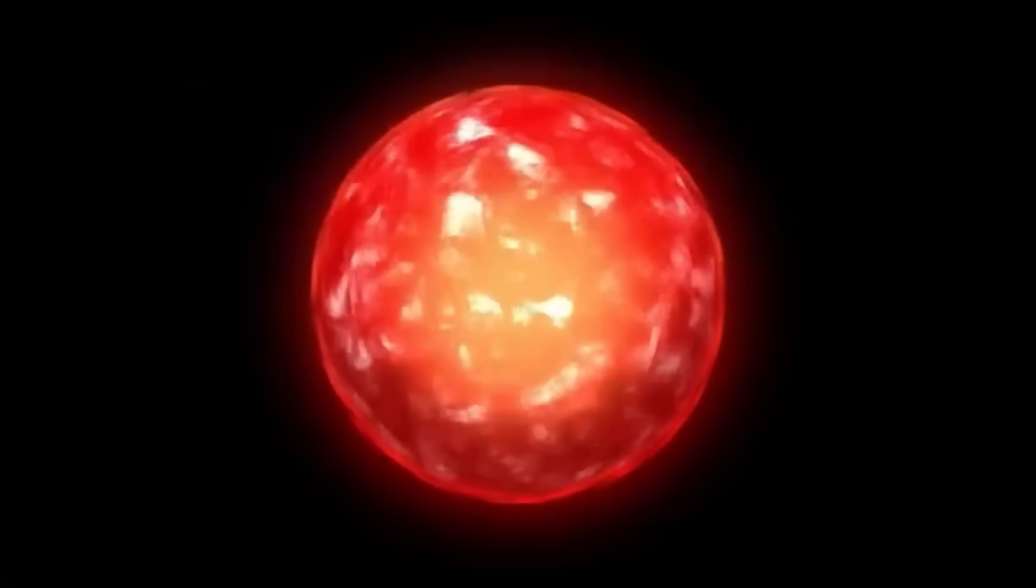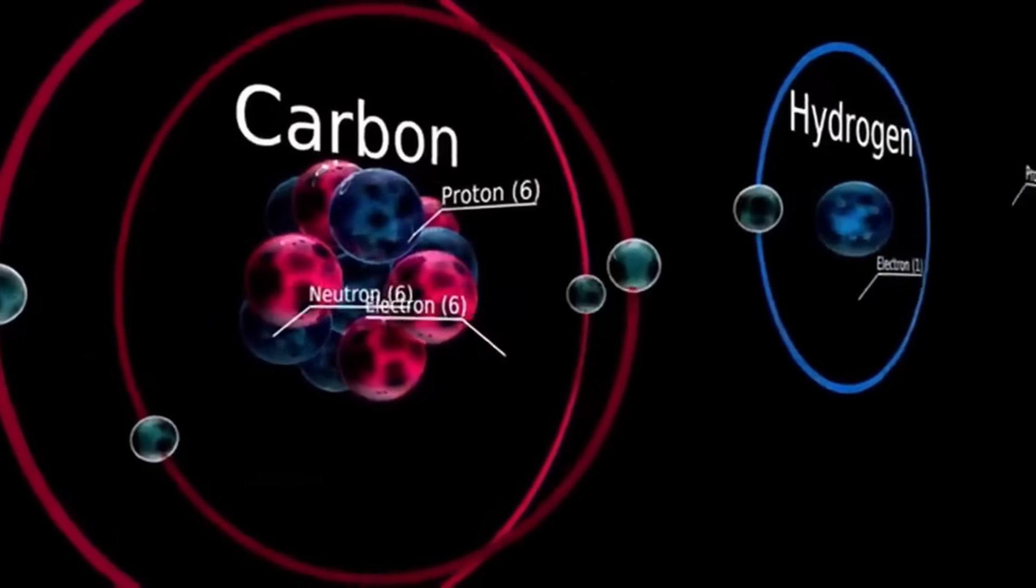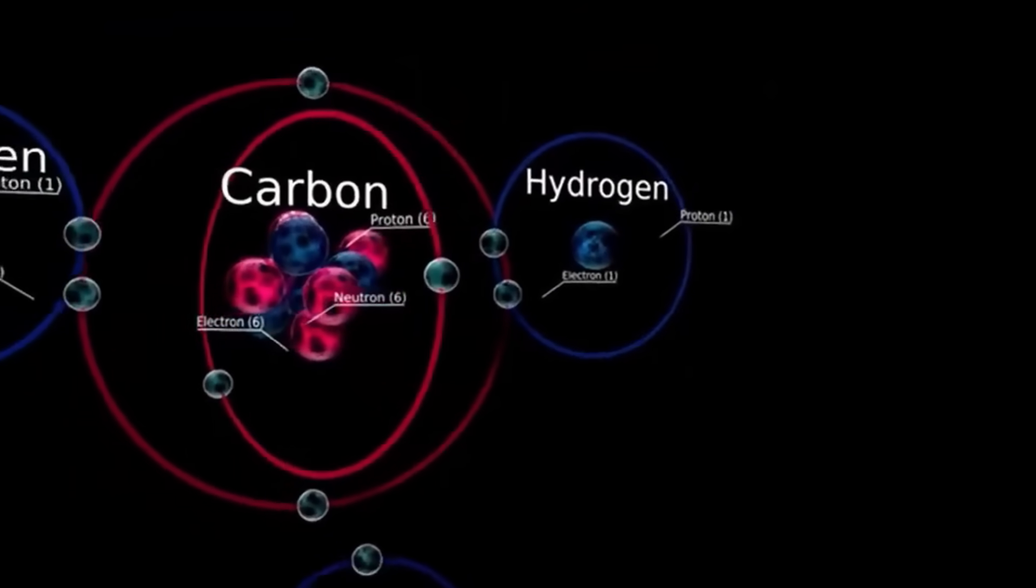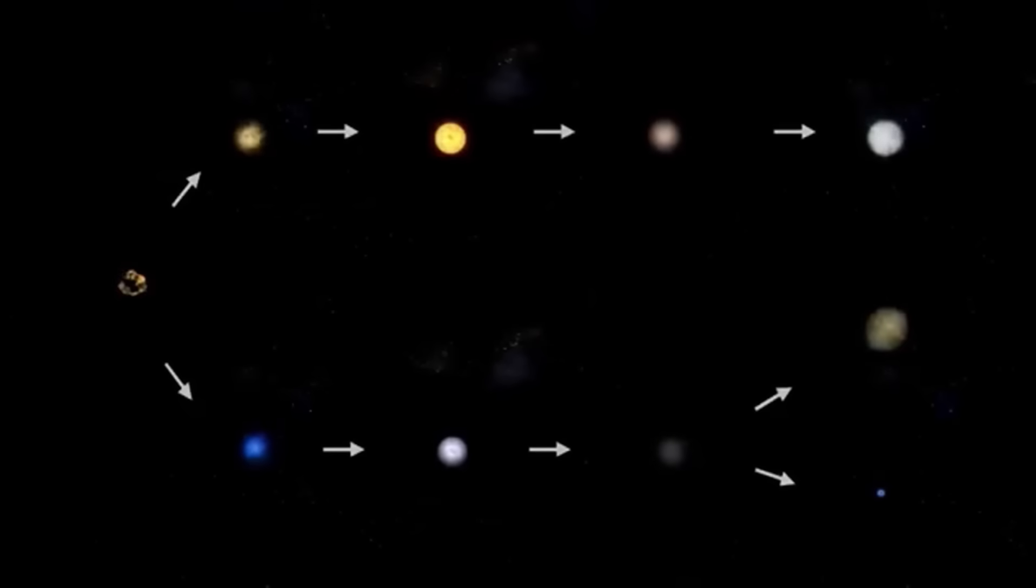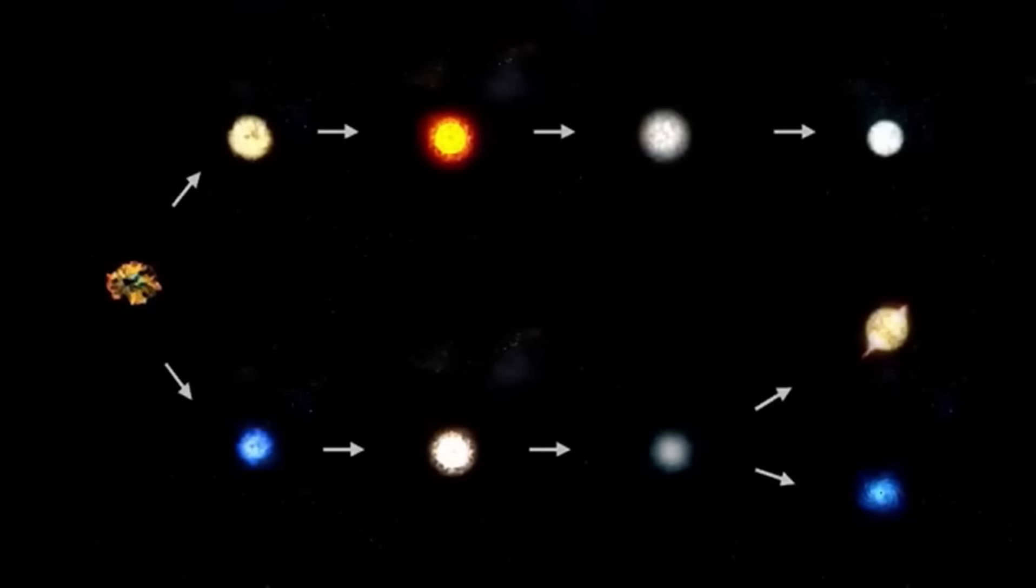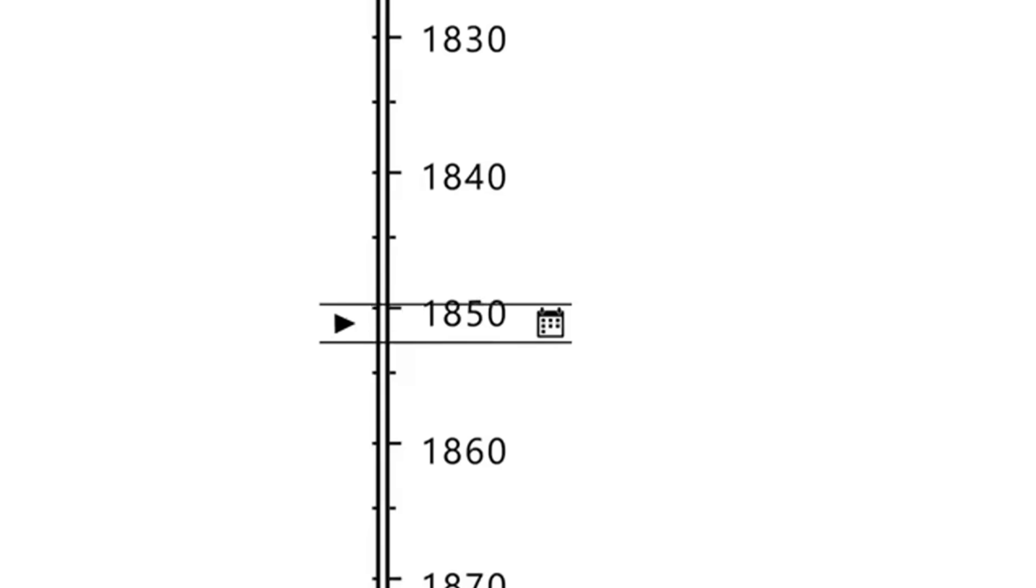However, its size is not the only thing that makes it noteworthy. Betelgeuse is at the very end of its life cycle in a phase known as the red supergiant phase, where it is expanding and cooling after billions of years spent fusing hydrogen into helium in its core. Betelgeuse's age is equally remarkable, estimated to be around 8 to 8.5 million years old.